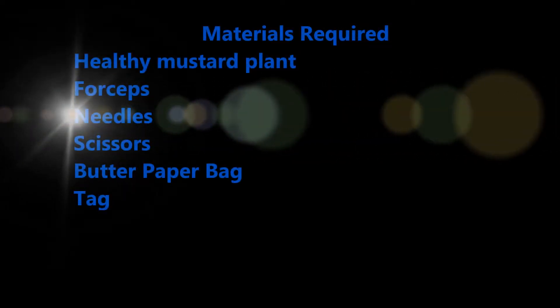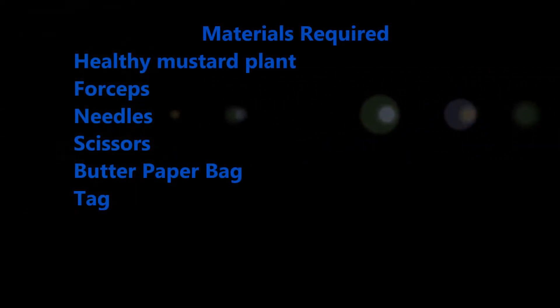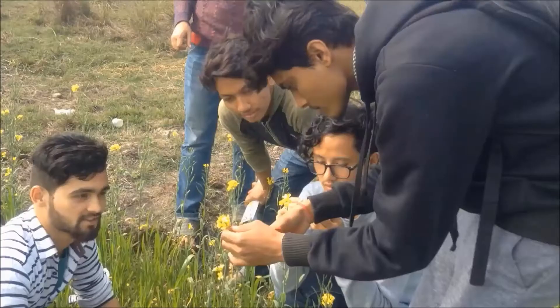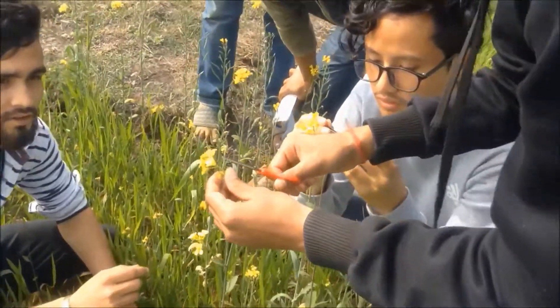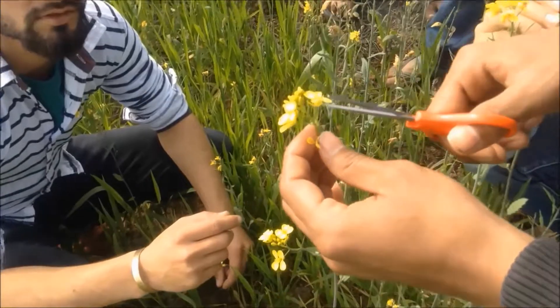Today I am going to demonstrate how emasculation is done in mustard plant. For this we require the materials: healthy mustard plant, forceps, needles, scissors, butter paper bag, and tag. First of all we select a healthy mustard plant.